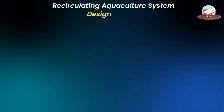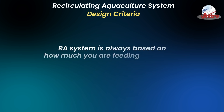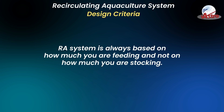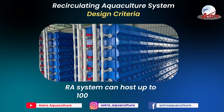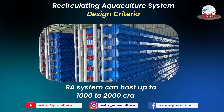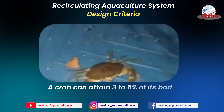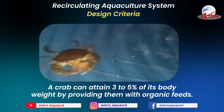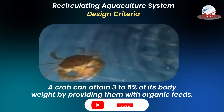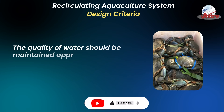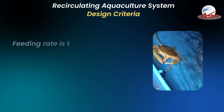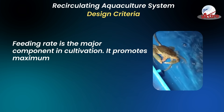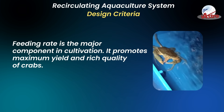Recirculating aquaculture system design criteria: the system is always based on how much you are feeding and not on how much you are stocking. It can host up to 1,000 to 2,000 crabs. A crab can attain 3 to 5 percent of its body weight by providing organic feeds. Water quality should be maintained appropriately, and feeding rate is the major component in cultivation, promoting maximum yield and rich quality.